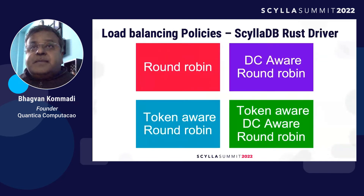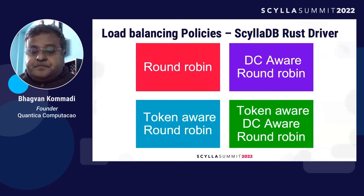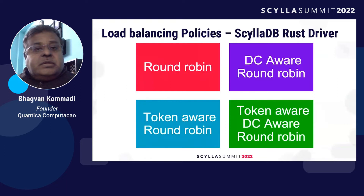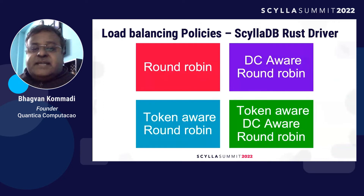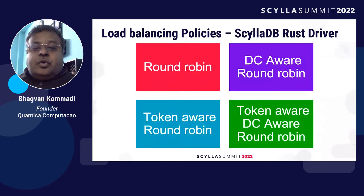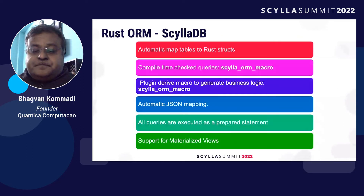Sometimes you want to insert a timestamp into the database. There are load balancing policies within the ScyllaDB Rust driver: round robin, DC-aware round robin, token-aware round robin, and token-aware DC-aware round robin — three main types.